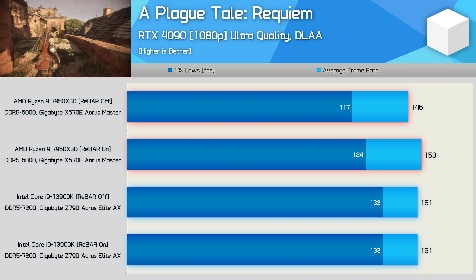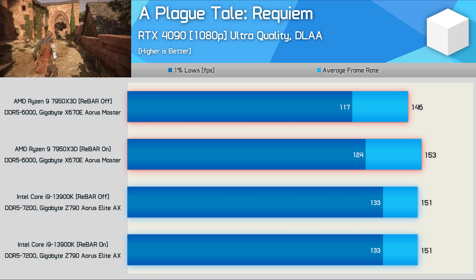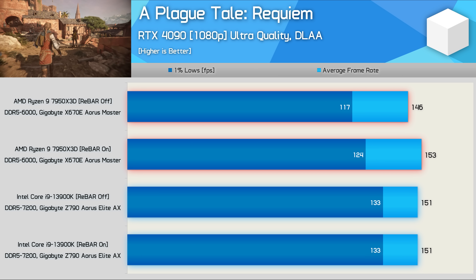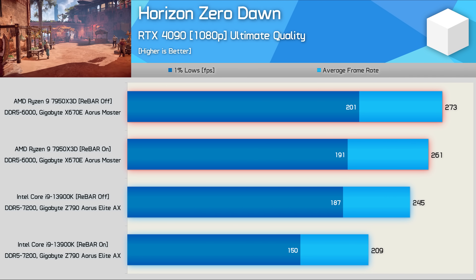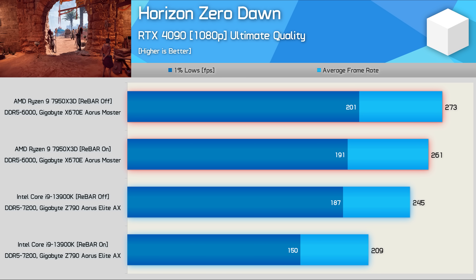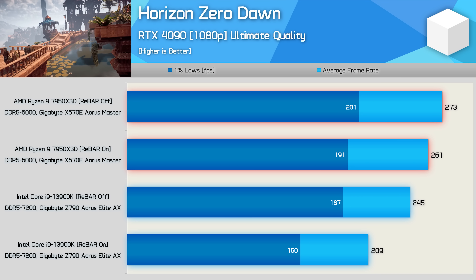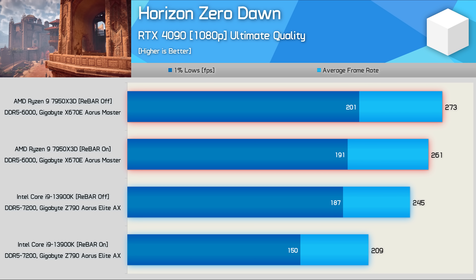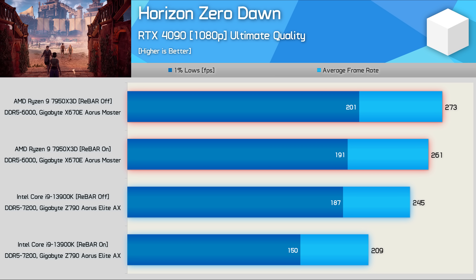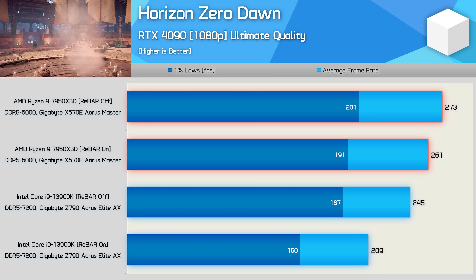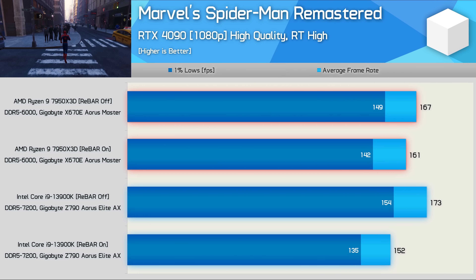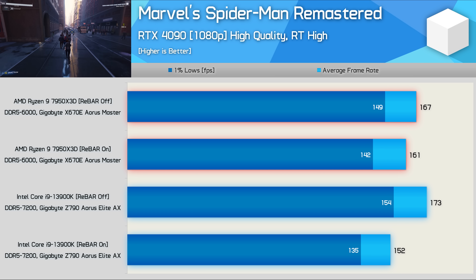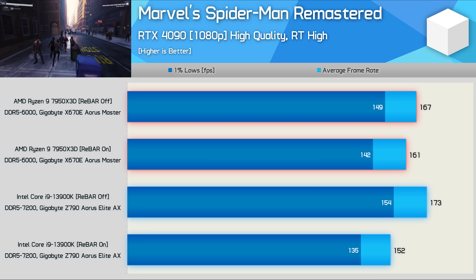Like Watch Dogs Legion, the 13900K saw no change in A Plague Tale: Requiem with rebar enabled, whereas the 7950X 3D saw a 5% boost, allowing it to match the 13900K — though 1% lows were still 7% lower with the Ryzen processor. In Horizon Zero Dawn, with rebar disabled, both CPUs produced their best results, and the 7950X 3D led by an 11% margin. However, with rebar enabled on both platforms, the 7950X 3D is now 25% faster — rebar only reduced its performance by 4%, whereas the 13900K was 15% slower. In Spider-Man Remastered, the 7950X 3D was 4% faster with rebar disabled, while the 13900K was 14% faster without it — making the 7950X 3D 6% faster than the Core i9 with rebar enabled, but 3% slower with it disabled.